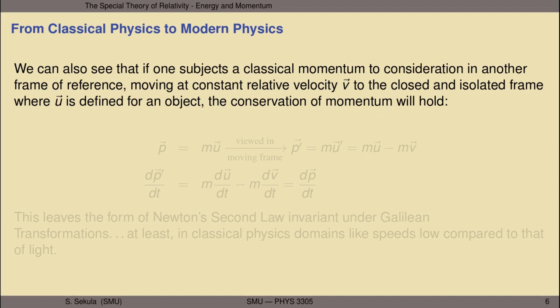If we subject the classical momentum concept to moving from one frame of reference to another — imagine a second frame s-prime observing an object moving at speed u-prime, with s-prime moving at relative velocity v to the original frame s — then in the rest frame the velocity is u and in the moving frame it's u-prime. The momentum observed in the rest frame is p = mu, and using the Galilean transformation we move to the moving frame where p-prime = mu-prime, relating to p via the Galilean velocity transformation u-prime = u minus v.